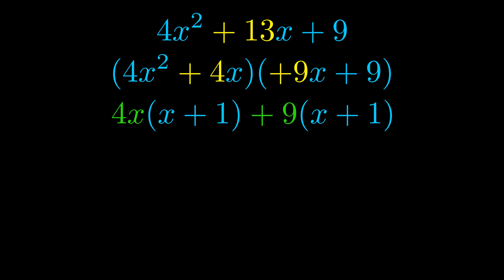Notice also how what remains inside of the parentheses is the same in both cases. The blue values are the same. Those blue values will become one of our factors and we will combine the two green values, the GCFs that we pulled out, to get the other one. And that is our fully factored equation.